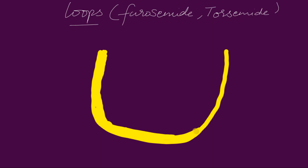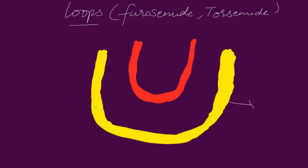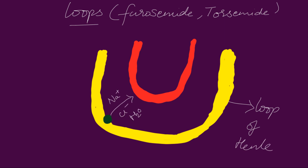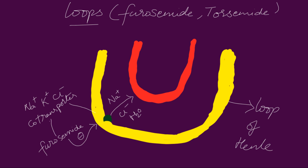Next come the loop diuretics. These are inhibitors of the sodium-potassium-chloride co-transporter. At the loop of Henle, sodium, chloride and water are reabsorbed into the blood capillaries, facilitated by the sodium-potassium-chloride co-transporter. These loop diuretics inhibit these co-transporters and prevent the reabsorption of sodium and water. So the blood remains thin, its volume does not increase, and the blood pressure decreases.